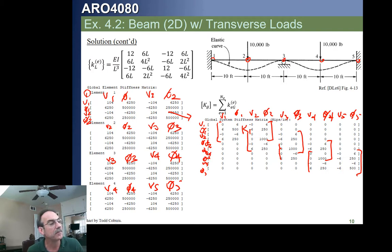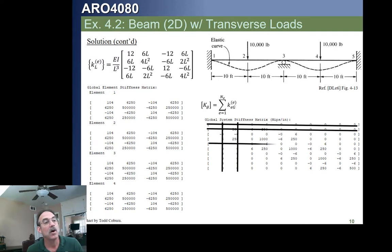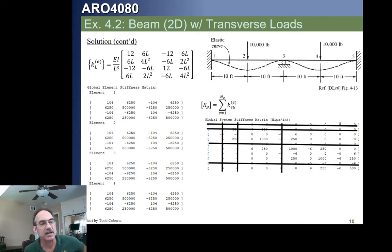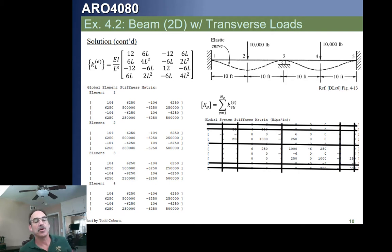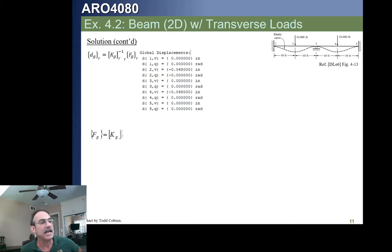Now we impose our boundary conditions. At node 1, both V and phi are constrained. At node 3, only V is constrained. At node 5, both deflection and rotation are constrained. This gives us the reduced matrix. At nodes 2 and 4 we have the free vertical displacement and rotation DOFs — with external forces applied at both locations but no applied moments.